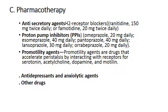Drug therapy includes anti-secretory agents: H2 receptor blockers such as ranitidine 150 mg twice daily or famotidine 20 mg twice daily; and proton pump inhibitors such as omeprazole 20 mg daily or pantoprazole 40 mg daily. Promotility agents enhance gastric motility by accelerating peristalsis through interactions with receptors for serotonin, acetylcholine, motilin, and dopamine — examples include domperidone and garopride.